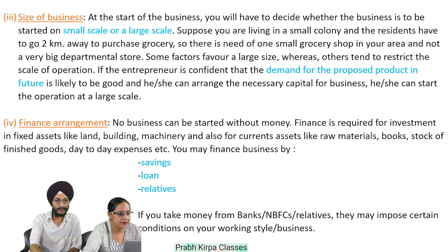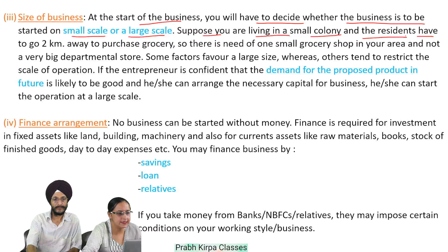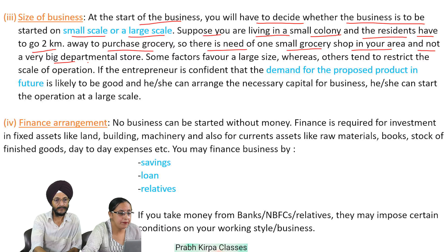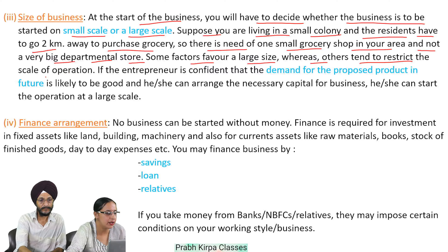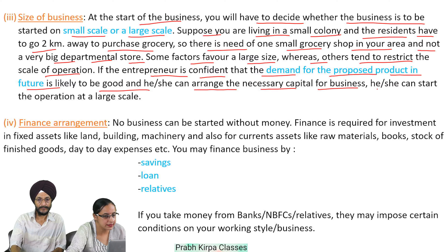Third, size of business: at the start of the business, you will have to decide whether the business is to be started on a small scale or a large scale. For example, if you are living in a small colony where residents have to go 2 km away to purchase grocery, there is need of one small grocery shop, not a very big departmental store. If the entrepreneur is confident that demand for the proposed product is likely to be good and can arrange the necessary capital, he can start operations at a large scale.